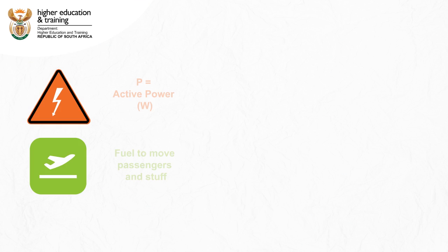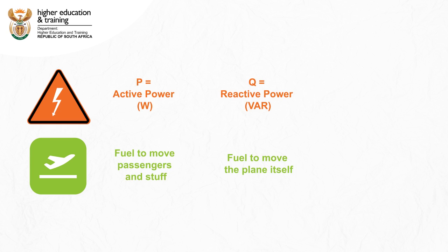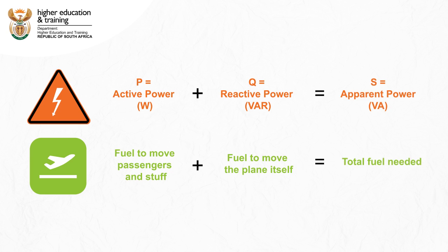We call the energy used to do the useful work in a circuit active power or real power. It is measured in watts and we give it the symbol P for power. We call the energy used to do necessary but non-useful work, like generating magnetic fields, reactive power, and measure this as volt-amperes reactive. We give it the symbol Q. If we add these two together, we get the total or apparent power needed by the circuit. We measure this as volt-amperes and give it the symbol S.